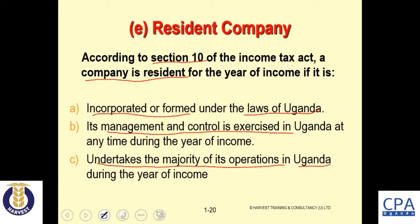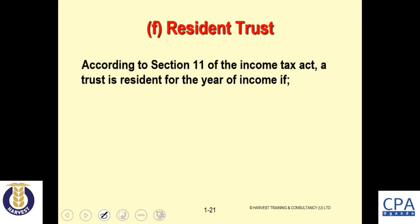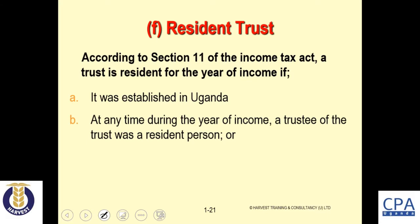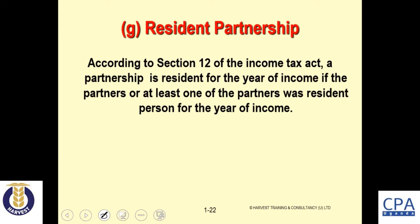According to Section 11 of the Income Tax Act, a trust is resident for the year of income if: (1) it is established in Uganda at any time during the year of income; (2) a trustee of the trust was a resident person; and (3) management and control of the trust is exercised in Uganda at any time during the year of income.